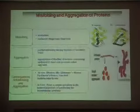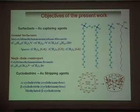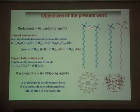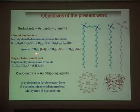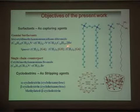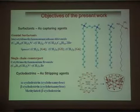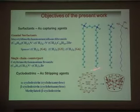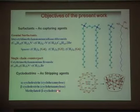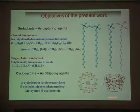To prevent that, we tried using different types of surfactants — the Gemini surfactants. Gemini surfactants contain two hydrophobic groups and two hydrophilic groups separated by a hydrophobic spacer, which can be of four, five, or six carbon lengths. We used bis-alkyldimethylammonium alkane dibromides with different spacers, termed G4, G5, and G6. The single-chain counterpart was also used for comparison. Cyclodextrins — alpha-cyclodextrin, beta-cyclodextrin, and methylated beta-cyclodextrin — were used as stripping agents.